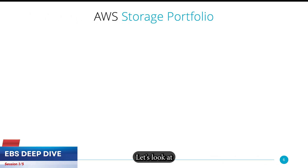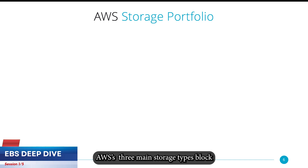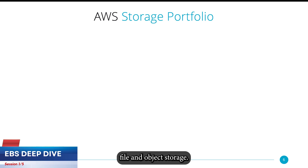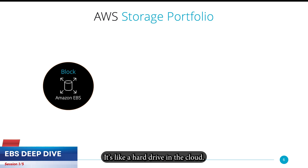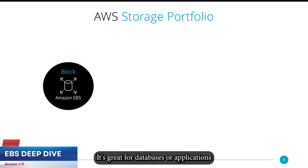Let's look at AWS's three main storage types: block, file, and object storage. First, block storage, like Amazon EBS. It's like a hard drive in the cloud. It's great for databases or applications that need fast and dedicated storage.